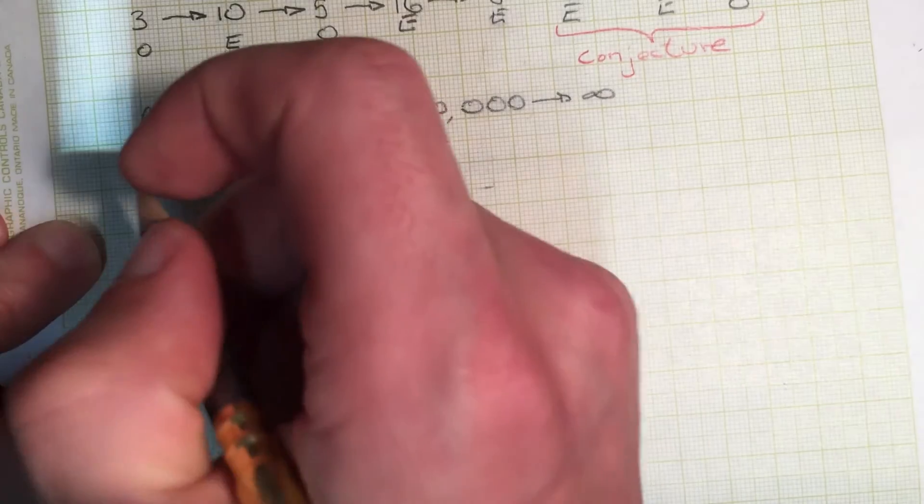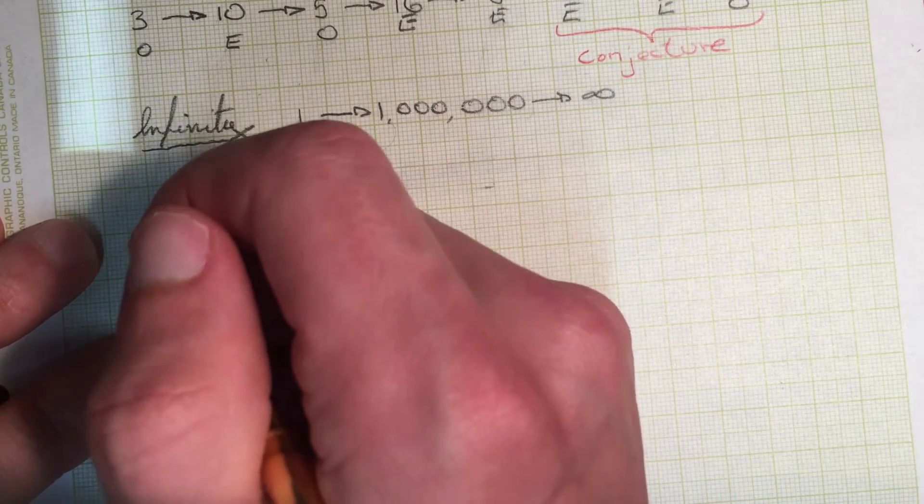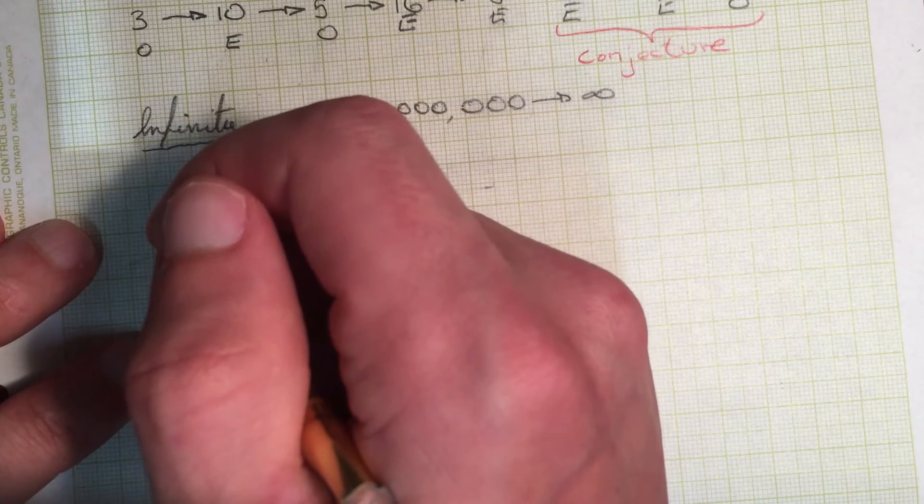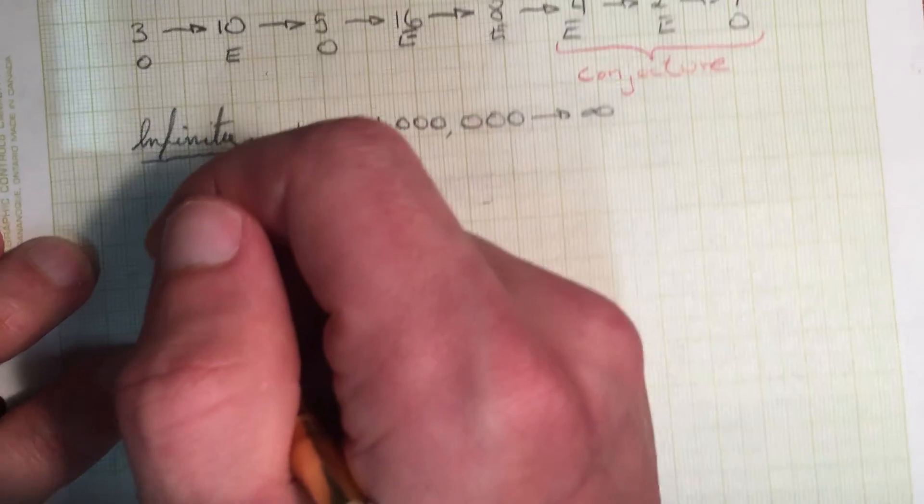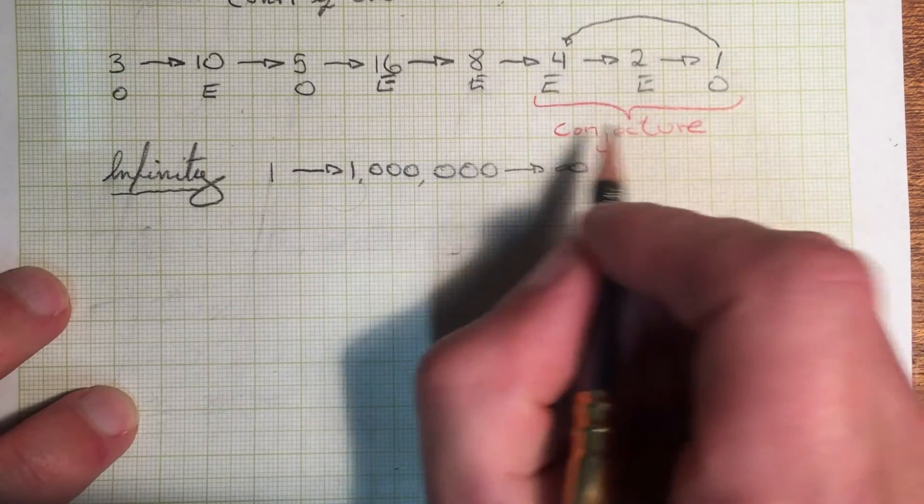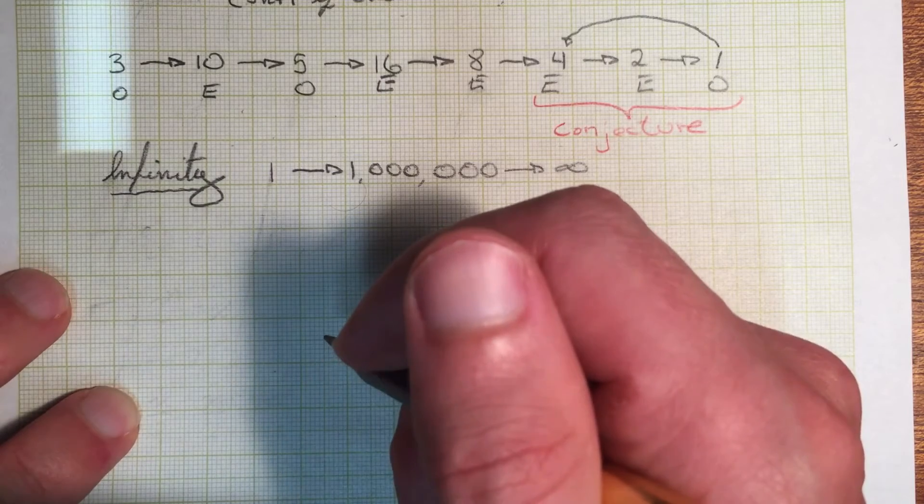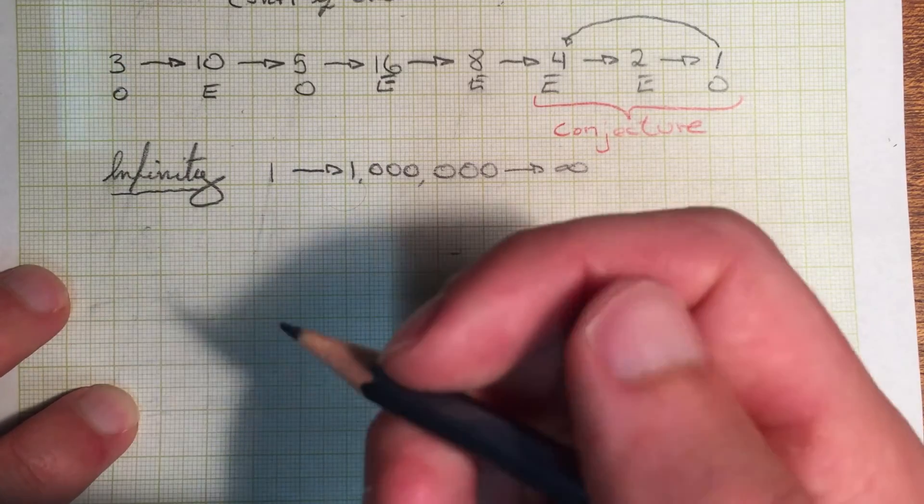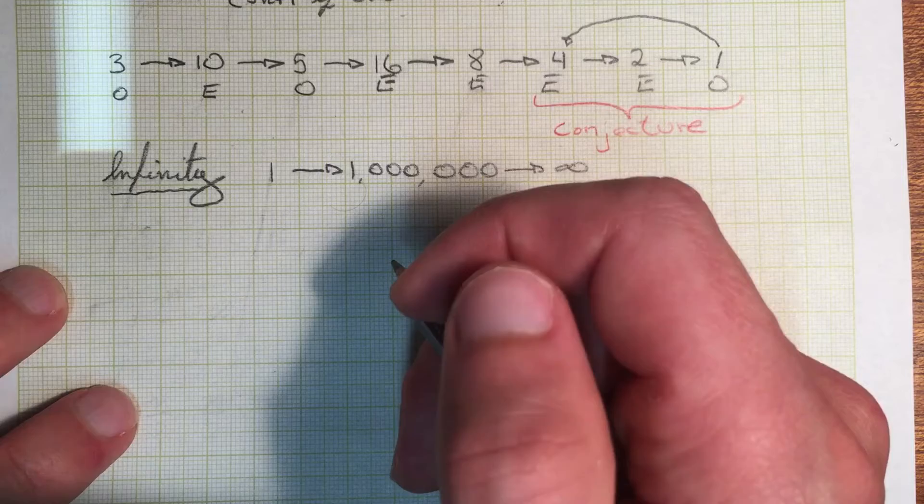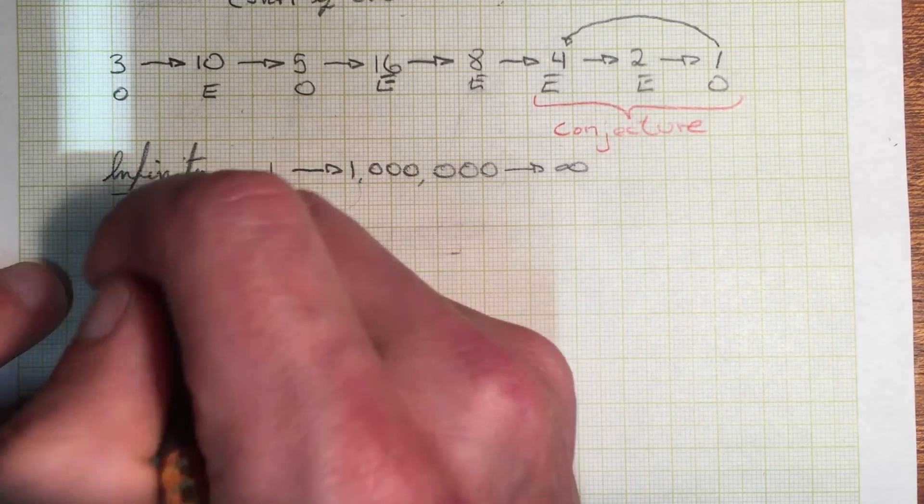And my first thought was, are there any numbers, like classes of numbers, that always reduce to this four, two, and one cycle, that are easy to prove, or easy to show that they always collapse? And it doesn't take too much thought to find a class of numbers right away, which is powers of two.